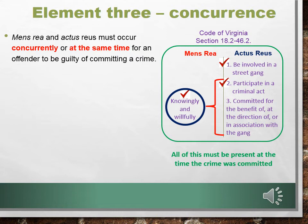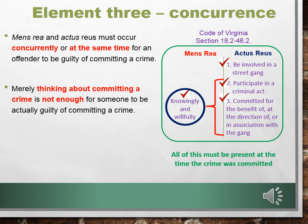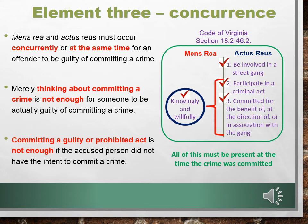If you cannot prove concurrence, there is no crime. Merely thinking about committing a crime is not enough to actually be guilty of committing a crime — you can think all you want, but if all you're doing is thinking, you are not guilty of anything. Also, committing a prohibited act is not enough if the accused person did not have the intent to commit a crime. You can do many things that would violate the law, but if you didn't intend to violate the law, you are not guilty of anything. Go to the next slide.